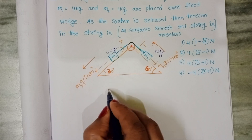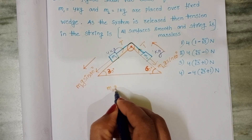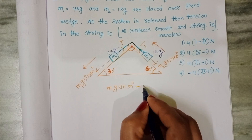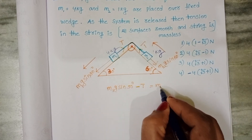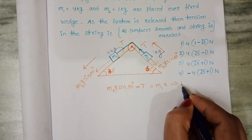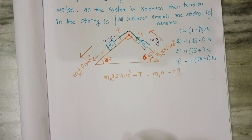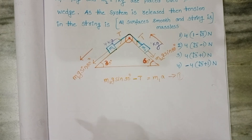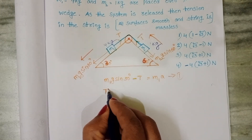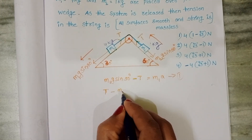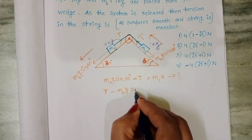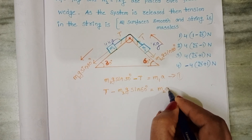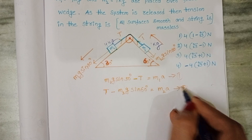Now write the equations. For M1: M1·G·sin 30° minus tensional force T equals M1·A — let this be equation 1. For M2, tension is greater than M2·G·sin 60°, so T minus M2·G·sin 60° equals M2·A — let this be equation 2.